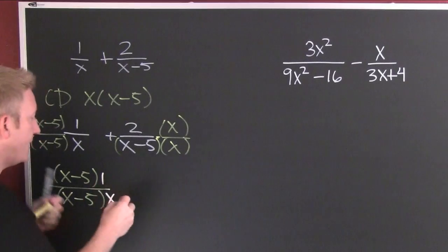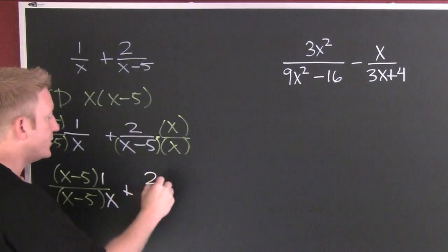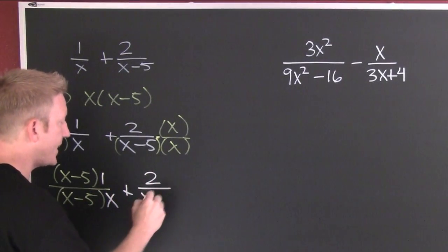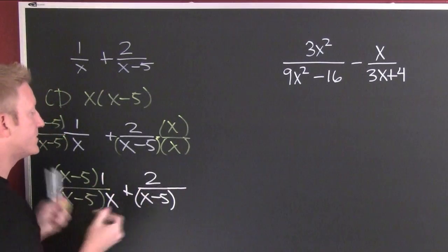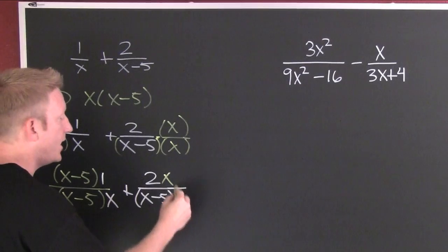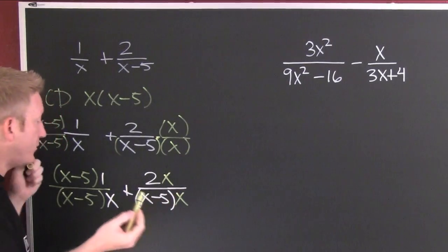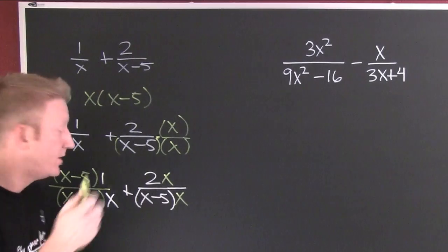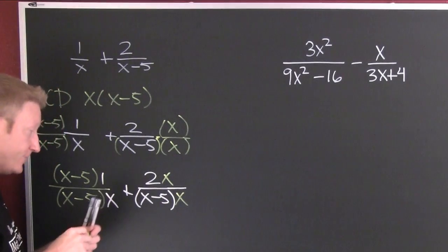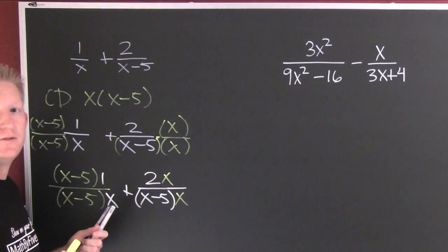And here I get numerator times numerator, or x minus 5 times 1 divided by x minus 5 times x. And here I'm gonna add it to 2, 2 over x minus 5, times x times x. So what did I do? I multiplied straight across. Do I have a common denominator now? Yes I do.